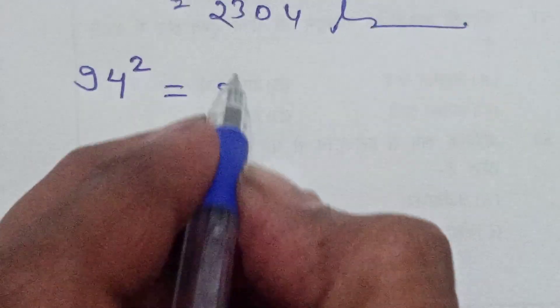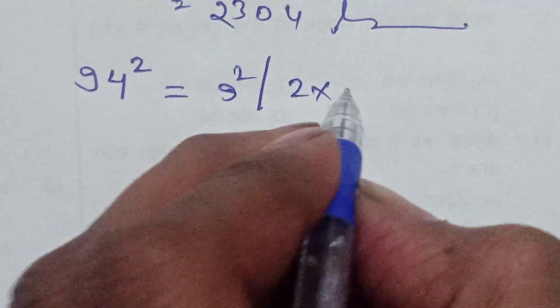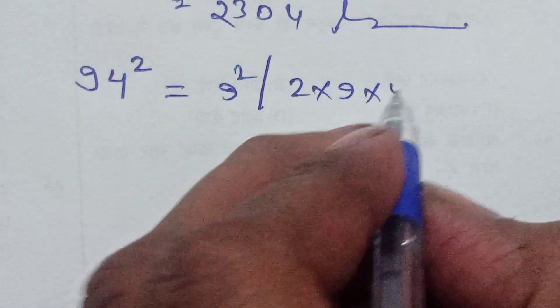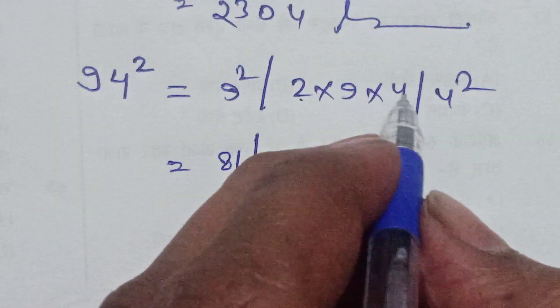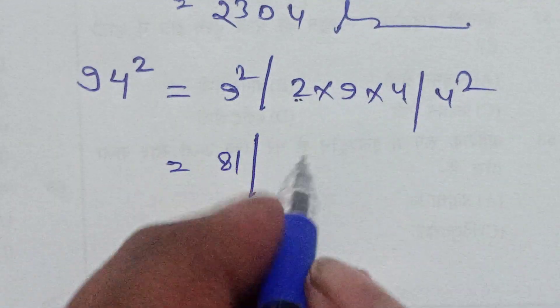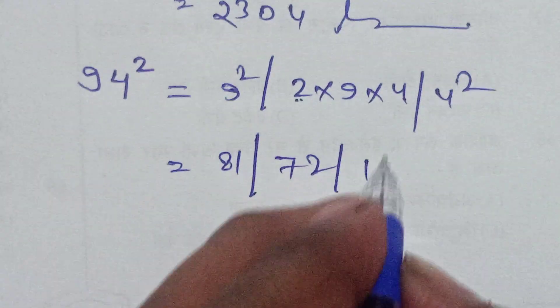And again question is 94 square. a square, 2ab, and b square. 9 square is 81, 2 times 9 times 4 is 72, 4 square is 16. Then writing answer 6, 6 add 2 is 8, 8 add 7 is 15, 15 add 8 is 23, 3 is 8836.